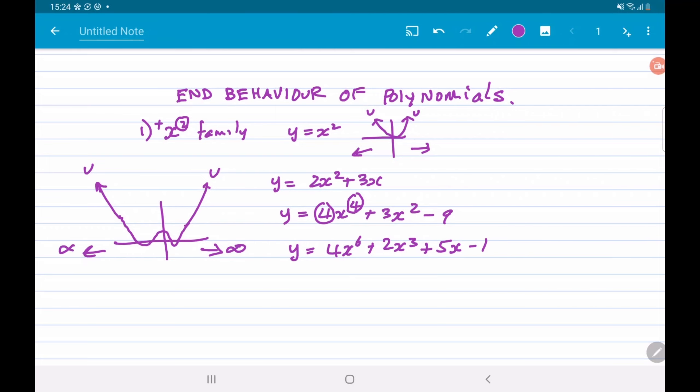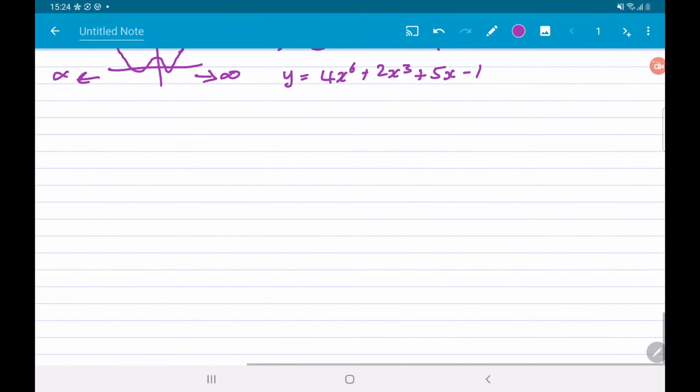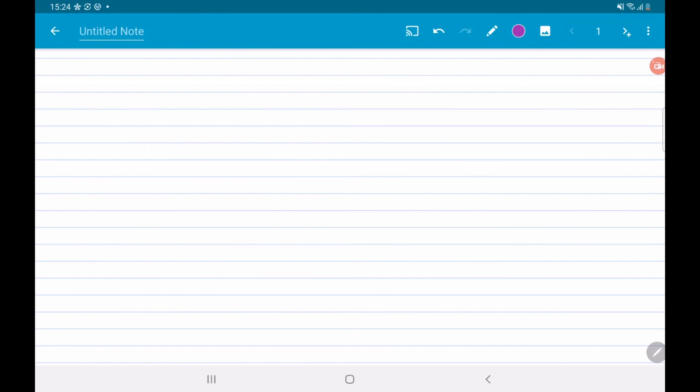The next family is the minus x squared family. So this is your down-down graph. That graph looks like that, and the ends of the graph will be going down.